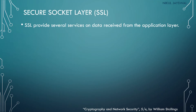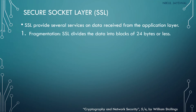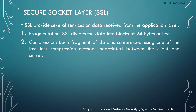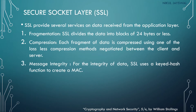SSL provides several services on data received from the application layer. The first service is fragmentation — SSL divides the data into blocks of 24 bytes or less. After that, it performs compression: each fragment is compressed using lossless compression, meaning data will not be lost after compression. The compression method is negotiated between the client and server, so they mutually decide which compression technique to use.